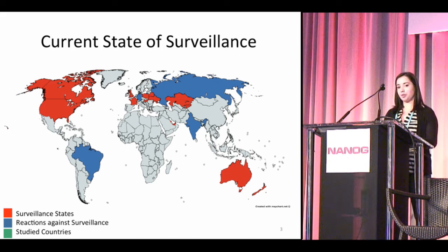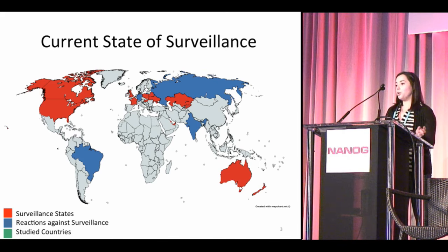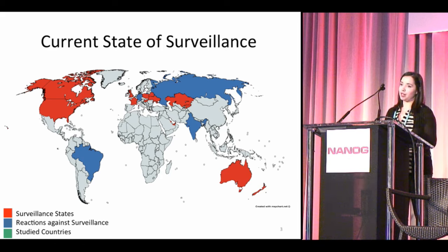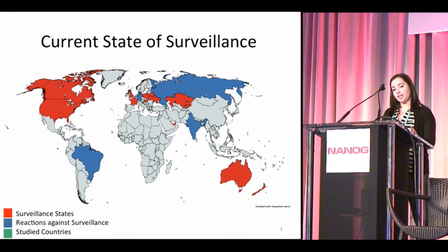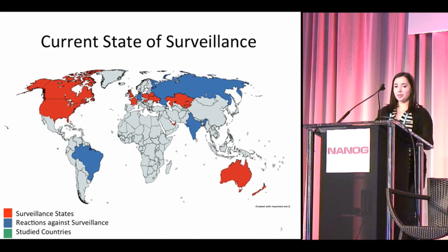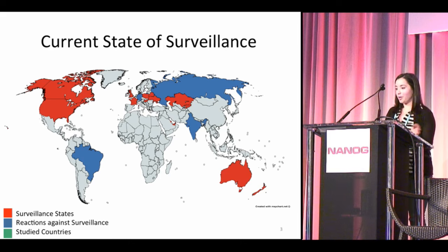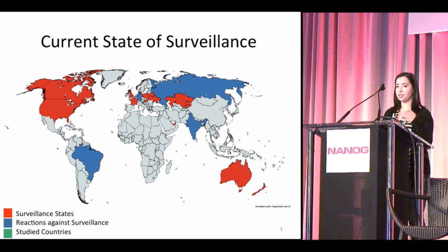With more surveillance laws being passed, countries are reacting. The countries in blue are just a few worried about foreign countries conducting surveillance on their citizens' traffic. Some are even taking measures to avoid specific countries. For example, Brazil, after the Snowden revelations, has taken extreme measures to avoid having their traffic go through the United States. They are building a 3,500-mile cable from Fort Aliza, Brazil to Portugal without using any American vendors, switching their government email from Microsoft Outlook to a homegrown system called Expresso, pressuring companies to host Brazilian clients' data locally, and they have one of the world's largest IXP ecosystems.